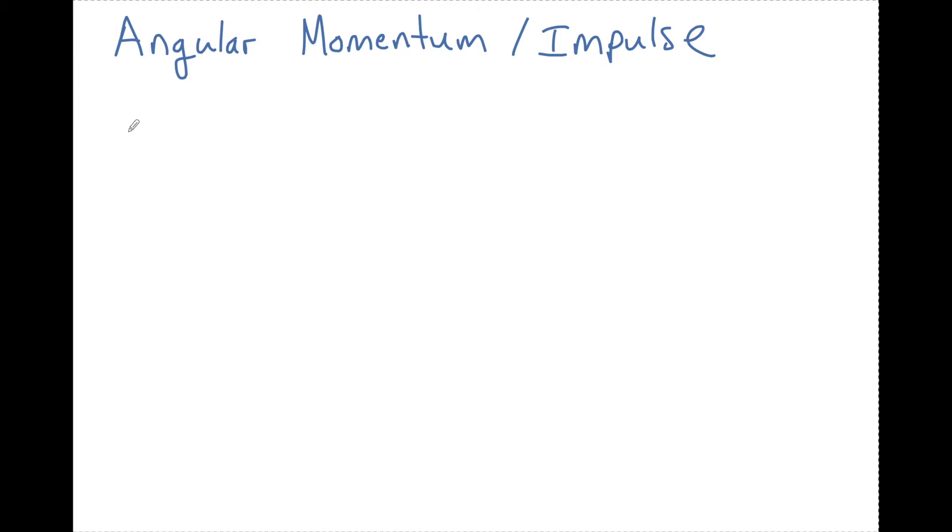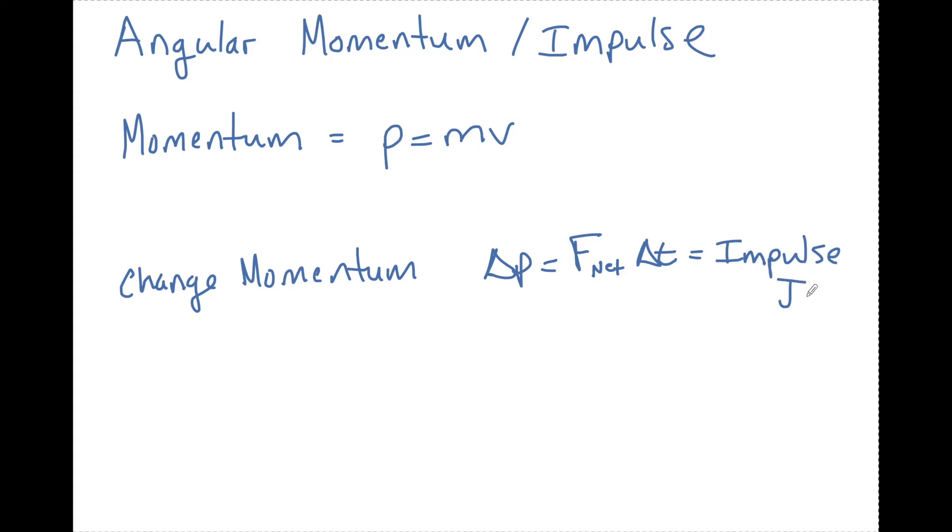We learned earlier in the year that momentum is equal to P, where this P or rho was equal to mass times velocity. And we saw later to change momentum, delta P was equal to some F net for some amount of time, and we called this impulse and it was a capital J. And then some side notes we learned that momentum is conserved if there's no outside forces acting on the system.